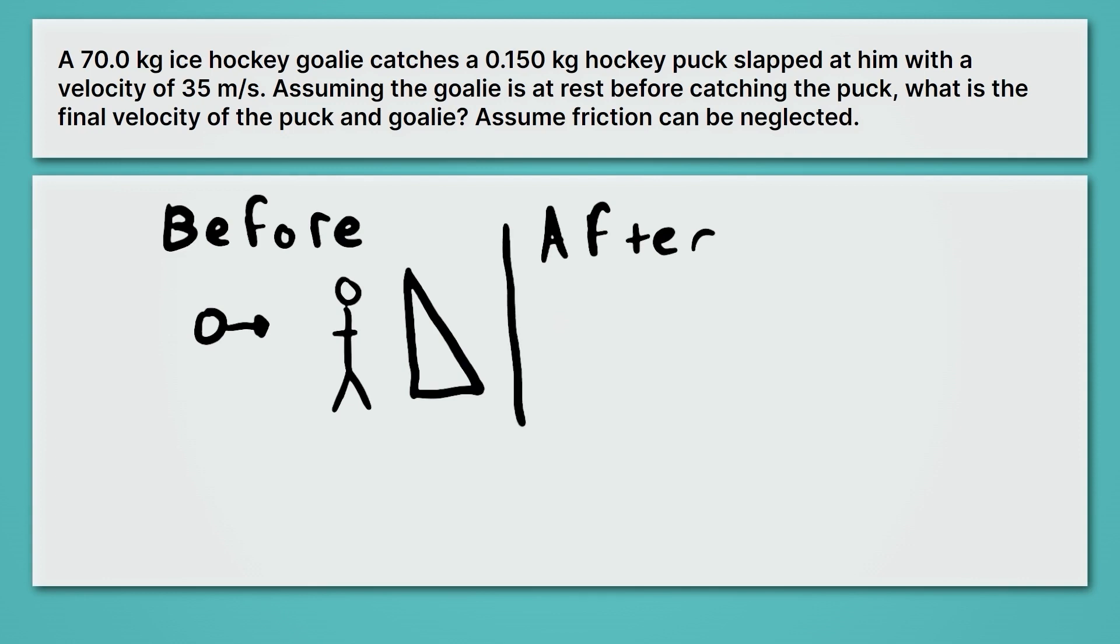After, the situation looks a little different. Afterwards, our goalie has now caught the puck. That's the puck in his hand. And together now, because the puck was moving, it's going to slide the goalie and the puck back towards the goal. Presumably with a slower velocity, because before we have just a puck traveling, and now that momentum is transferred to a whole person. So it's going to go slower, but it's going to continue traveling in the direction of the goal. Okay, now that we have a picture, let's go ahead and try to solve this problem.